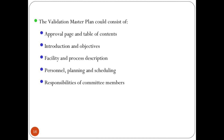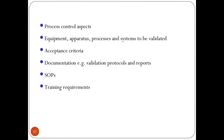The Validation Master Plan could consist of: an approval page and table of contents, introduction and objectives, facilities and process description, personnel, planning and scheduling, responsibilities of committee members, process control aspects, equipment, apparatus, processes and systems to be validated, acceptance criteria, documentation such as validation protocols and reports, SOPs, and training requirements.